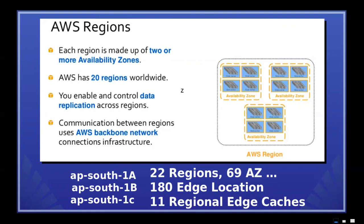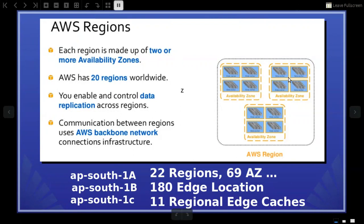Region-wise, an availability zone is a group of data centers. If you look at an availability zone, you will have around 4 data centers. There can be 4 data centers per availability zone, located in different locations.